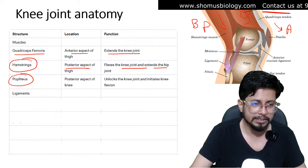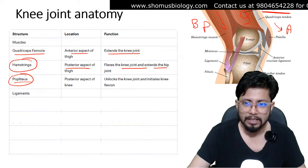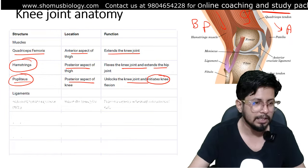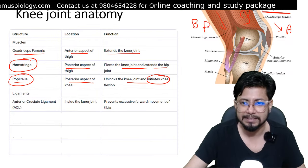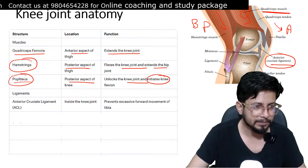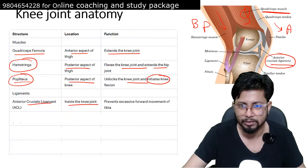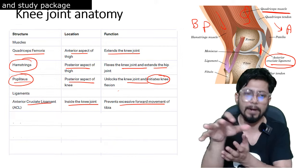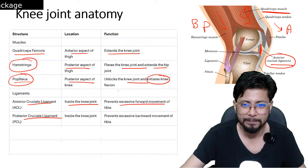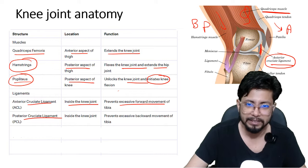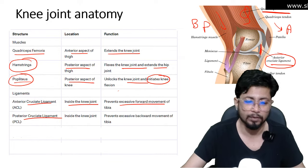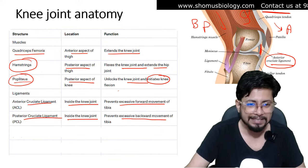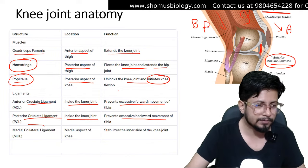Another important muscle is the popliteus, located on the posterior aspect of the knee. Its role is to unlock the knee joint and initiate knee flexion. Regarding ligaments: the ACL is inside the knee joint and prevents excessive forward movement of the tibia. The PCL prevents excessive backward movement of the tibia.